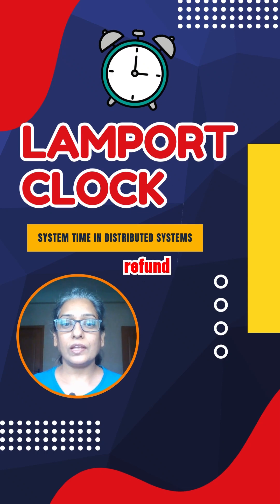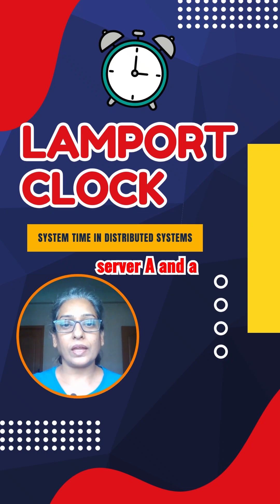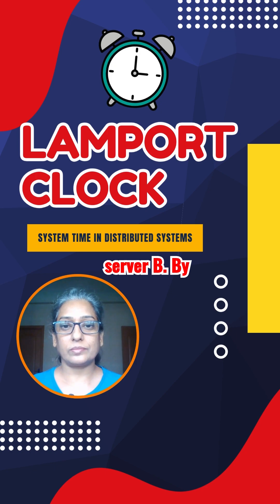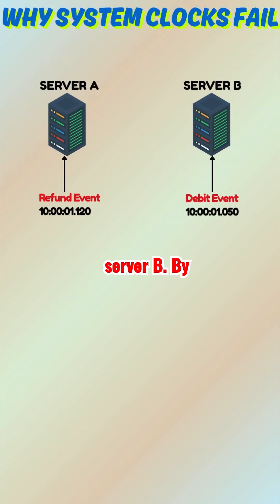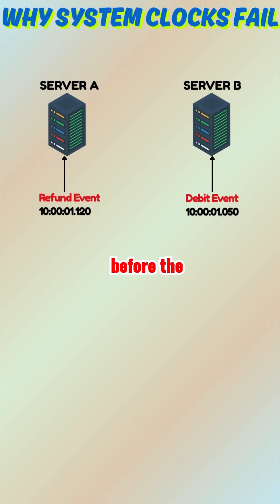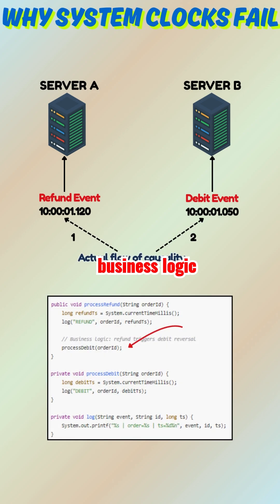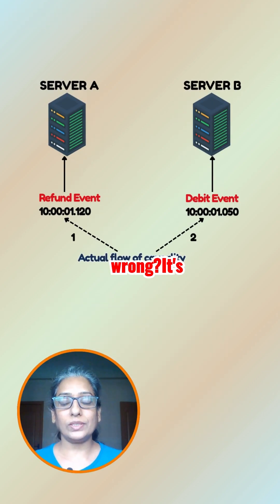Imagine a refund logged on server A and a debit logged on server B. By timestamps, it looks like the debit happened before the refund. But business logic says otherwise. What's gone wrong?